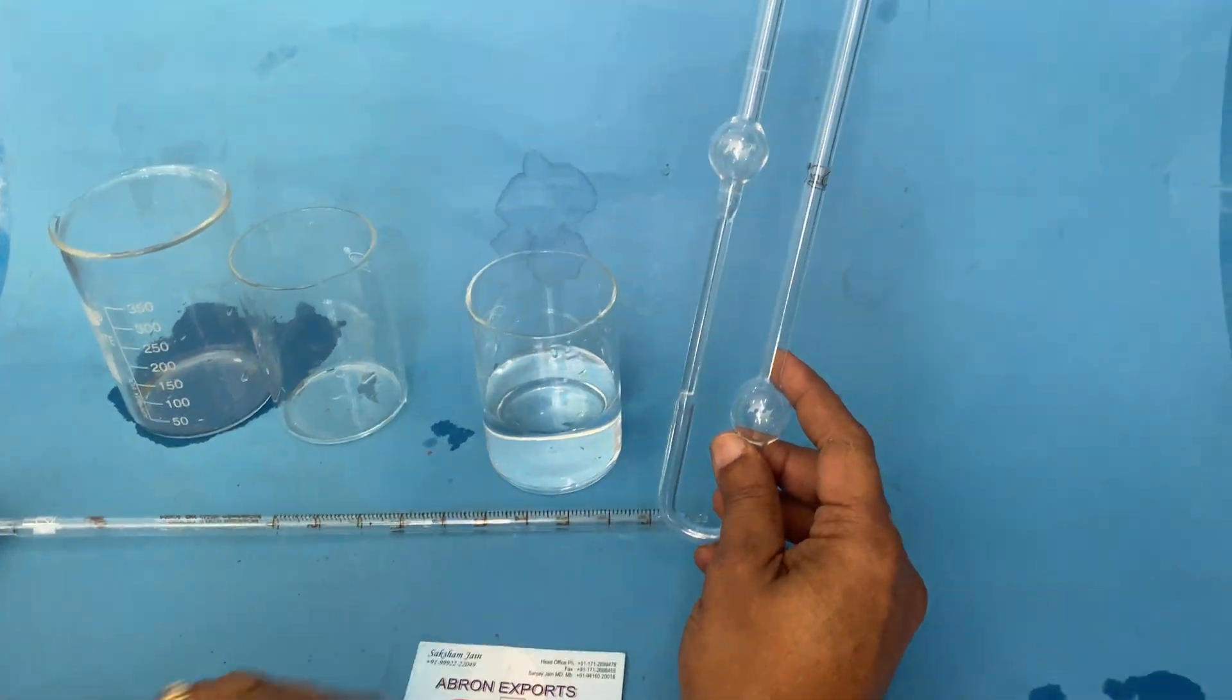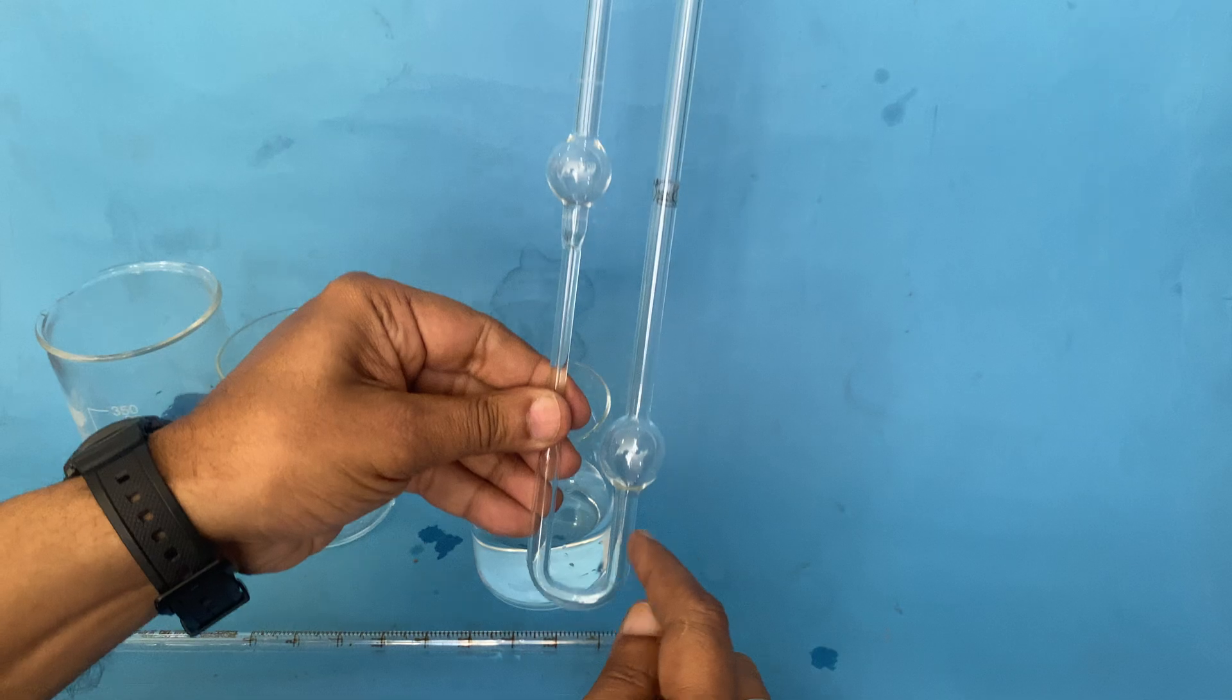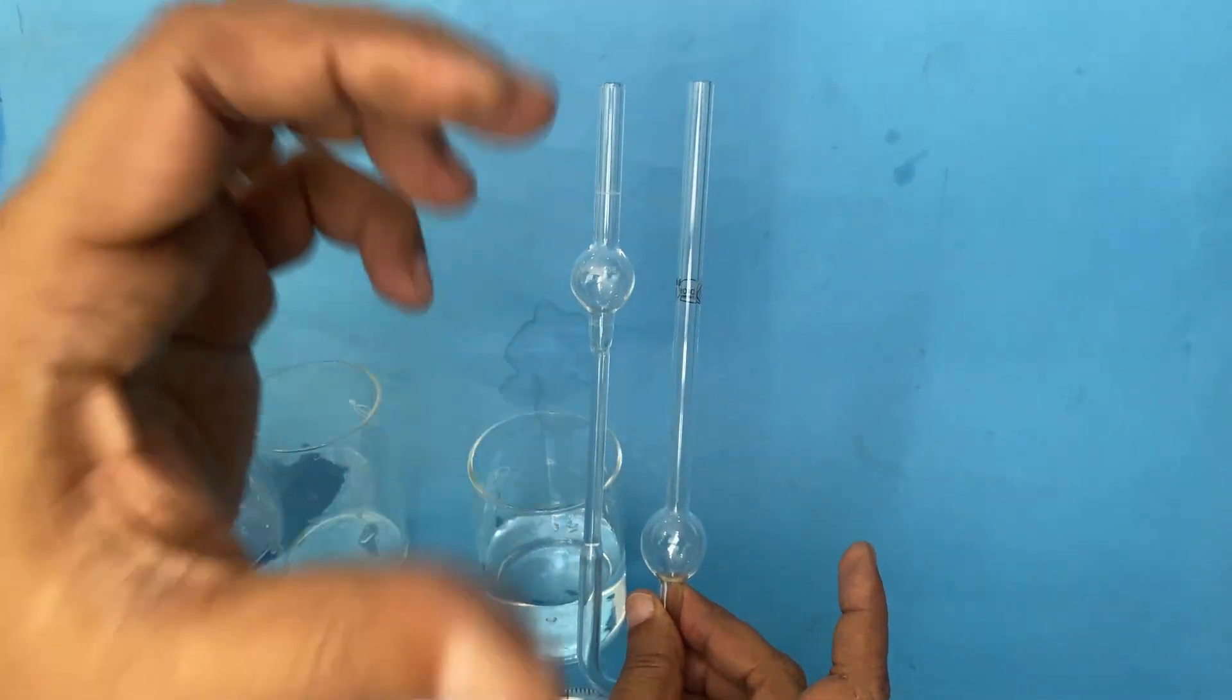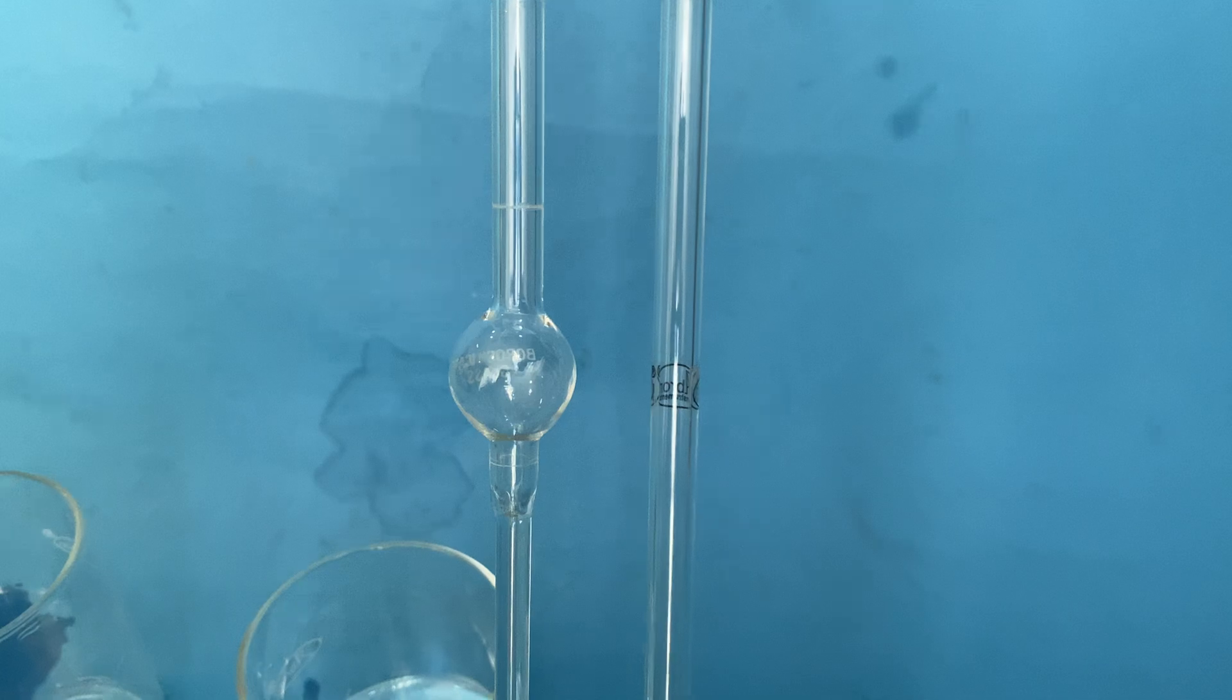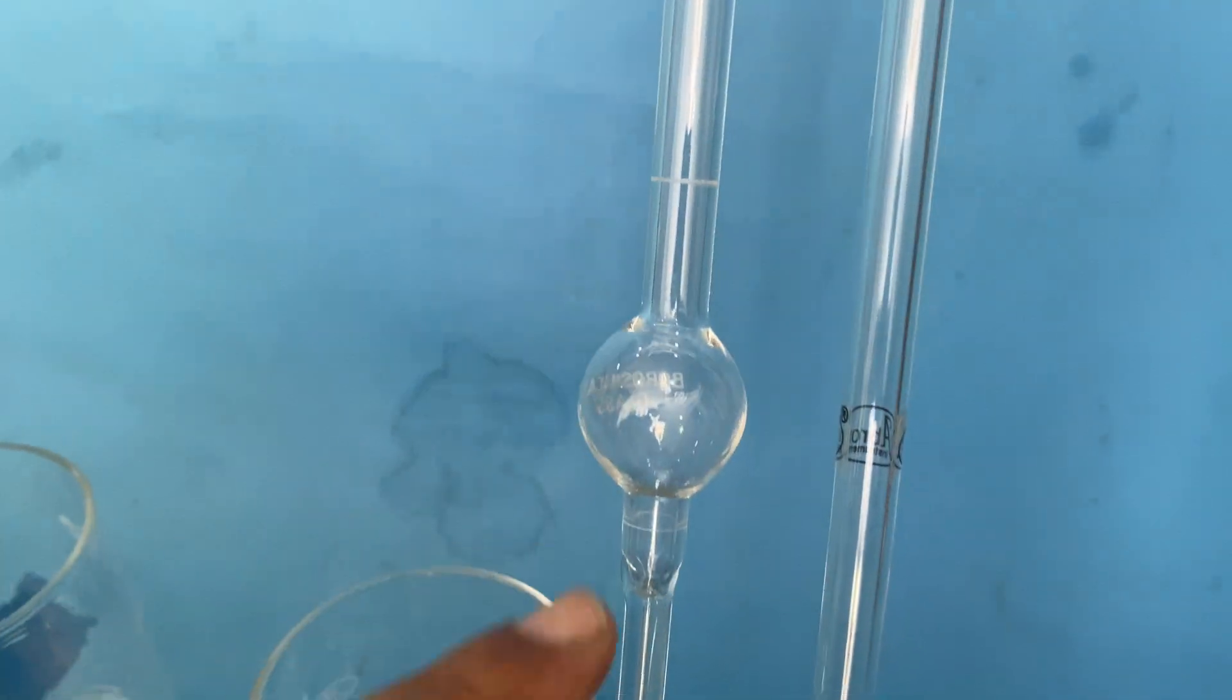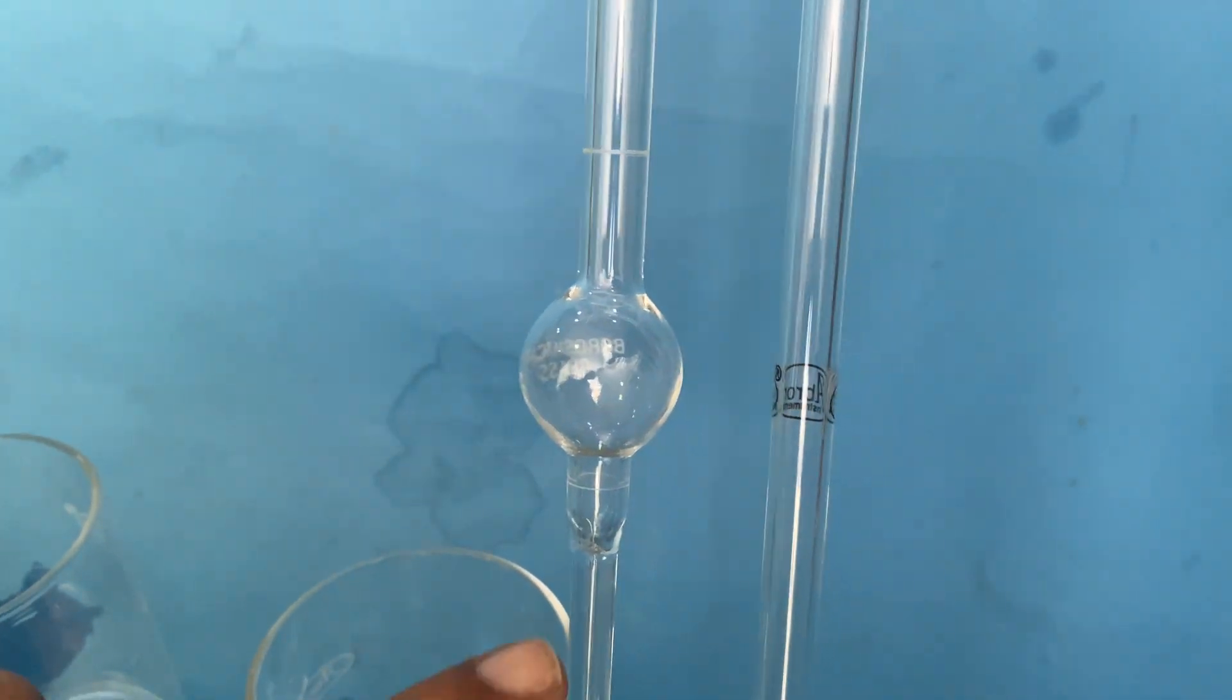This is a Brown viscometer, also called an Oswald viscometer. It has two limbs, one smaller bulb, one bigger bulb, and a capillary tube here. You can see the capillary tube. The upper bulb has two lines, one on the top and one at the bottom. One is for starting, another is for ending.